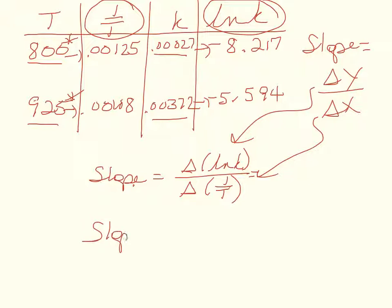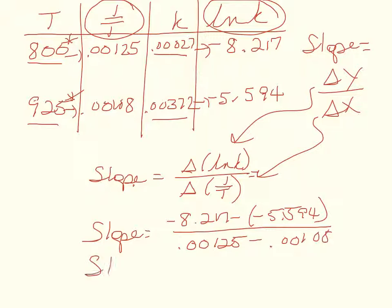And so the slope that I calculate from these two data points, which again is not normally a reliable way to calculate slope, but it's a quick way. So 8.217 minus negative 5.594, that's the change in value for natural log of k, over the change in value for 1 over t, which is 0.00125 minus 0.00108. And when I punch all that into my calculator, I get minus 2.623 divided by 0.00017 and that equals 15,429. I'm not done though because the slope is not exactly equal to activation energy.